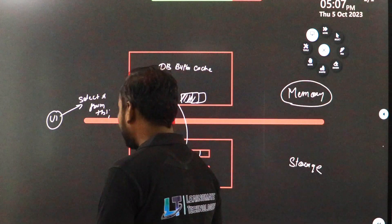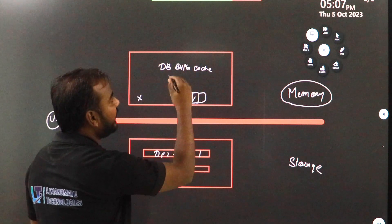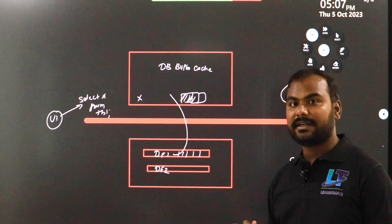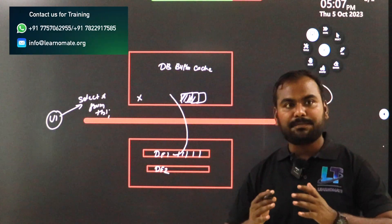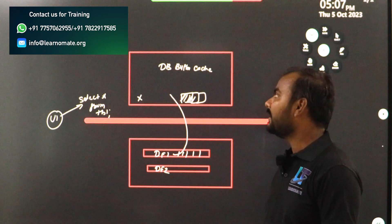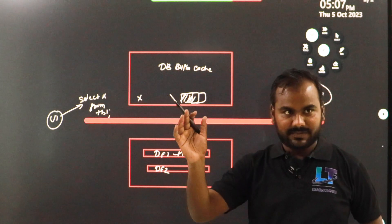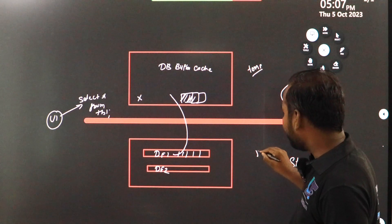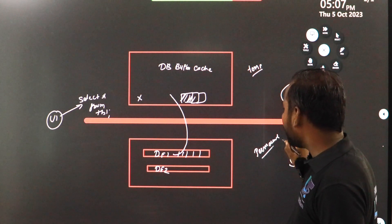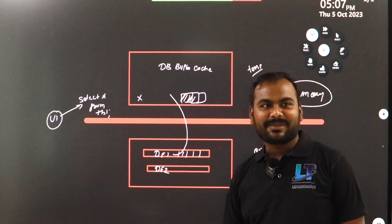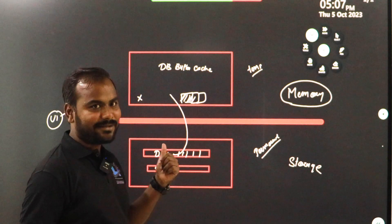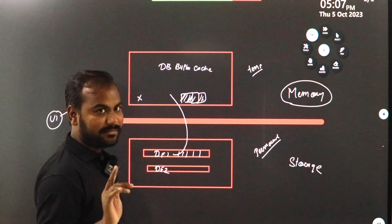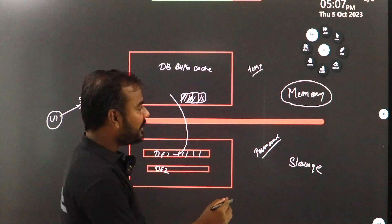There will be a question in your mind: the database buffer cache will have some sort of limit, correct? All the data cannot be stored inside the database buffer cache. Storage has big capacity, but memory is always costly. The data inside memory is temporary, while storage data is permanent. Everyone wants to store their data in the database buffer cache because performance-wise, you can retrieve data very fast. But there is a limit, and it is a part of your SGA.